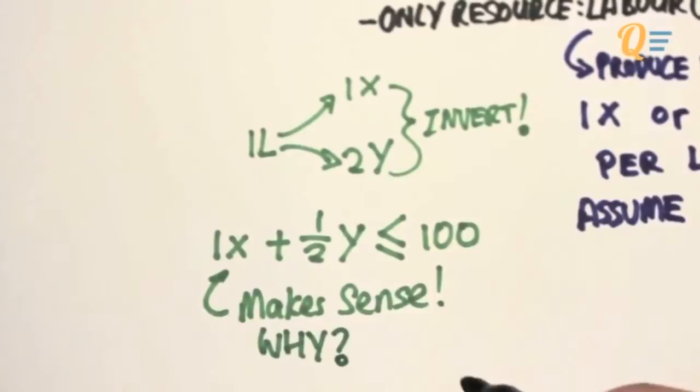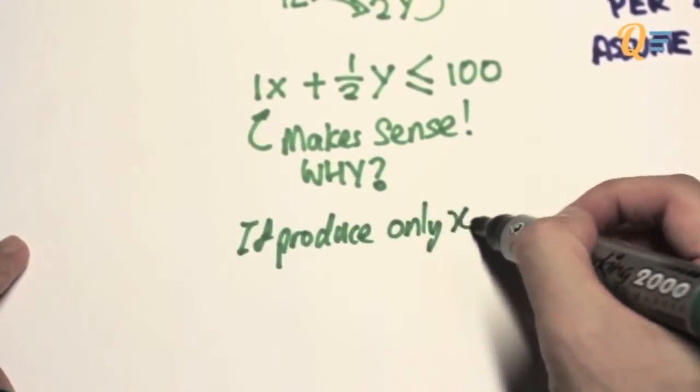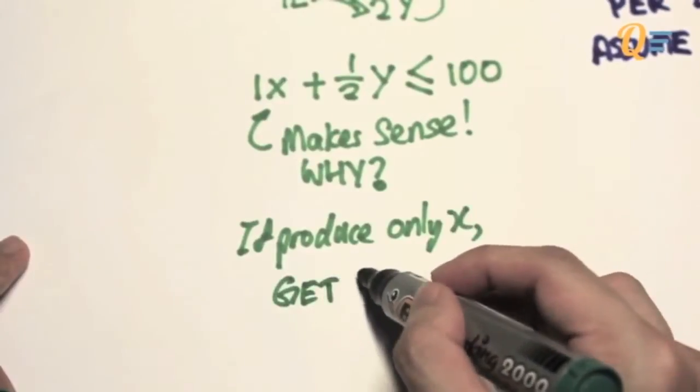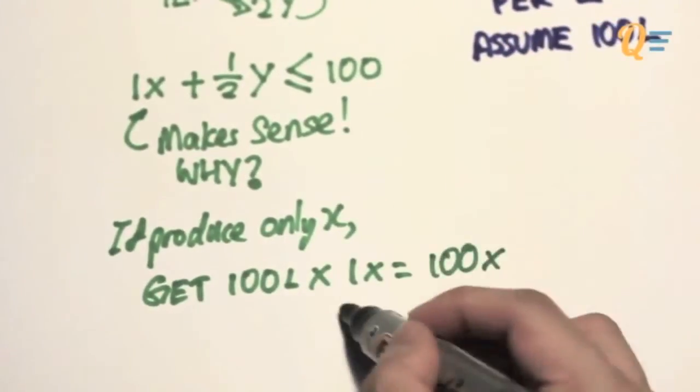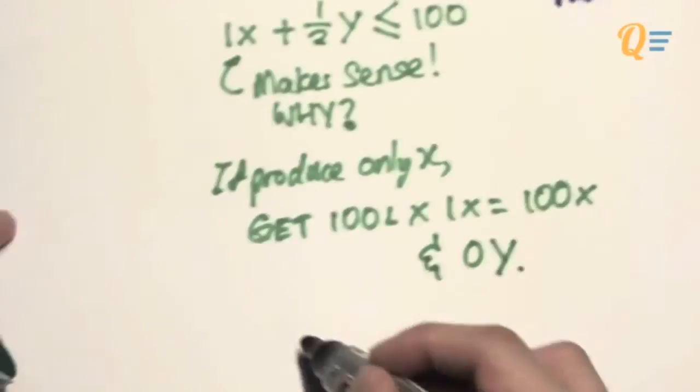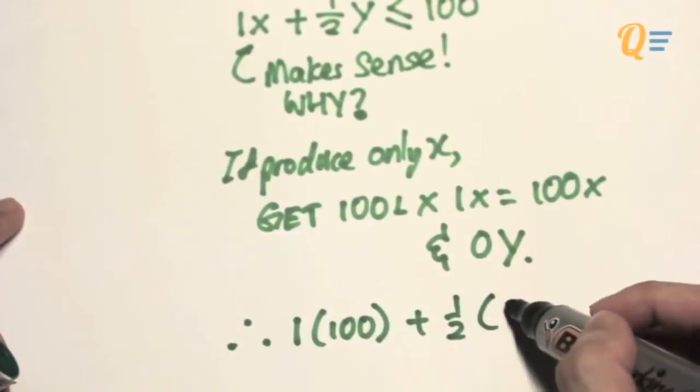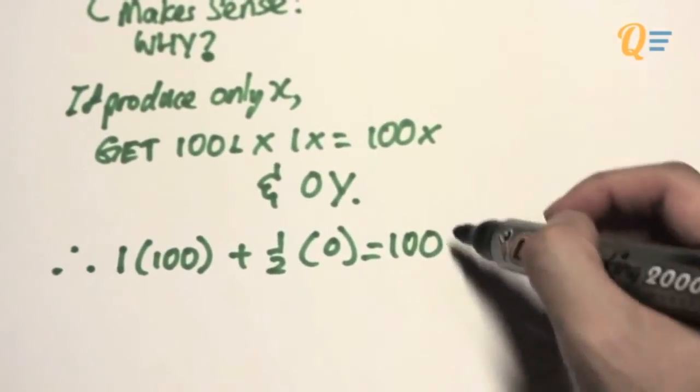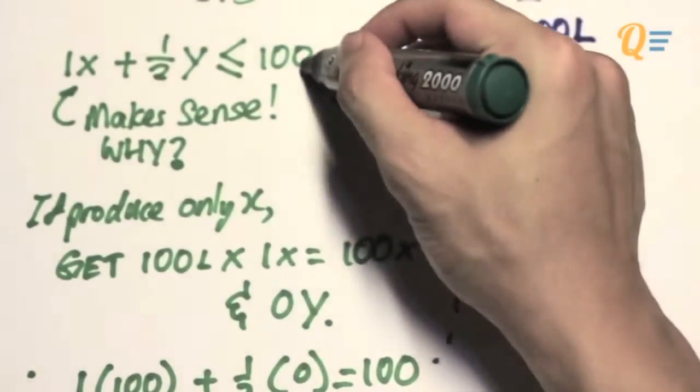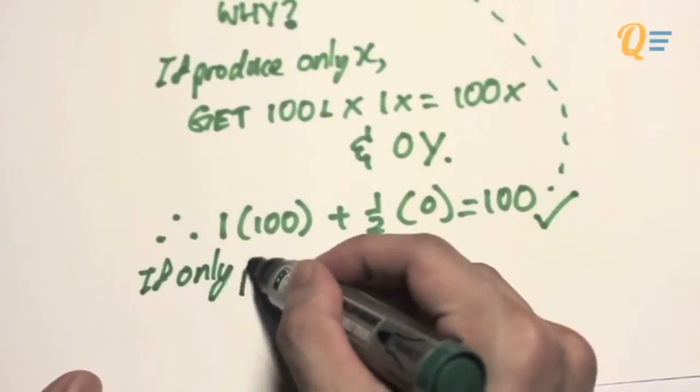Imagine if you were to produce only X. If you produce only X, this is what's going to happen. We're going to take 100 units of labor and multiply them by 1X each. We're going to get 100X and 0Y because we didn't produce any of them. If you plug 100 and 0 into the equation above, you're going to get a total of 100. As you can see, this equals the figure on top, given that we maximize our resources, which is labor. So it makes sense.